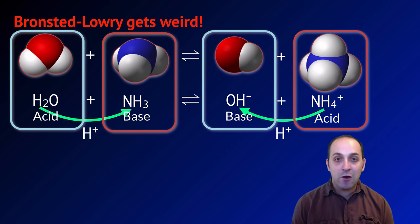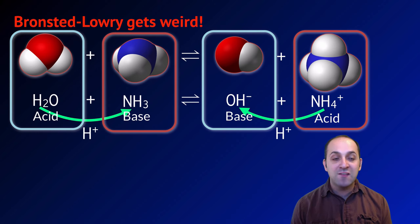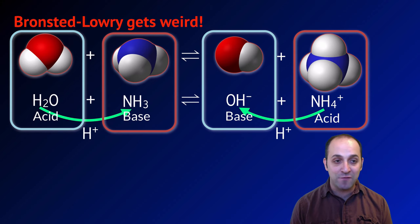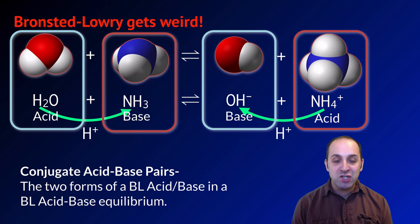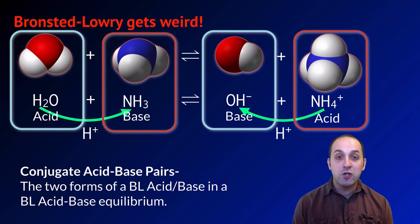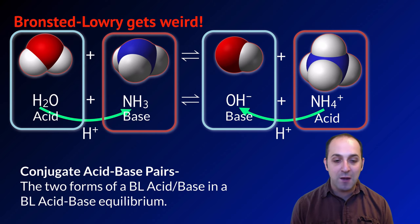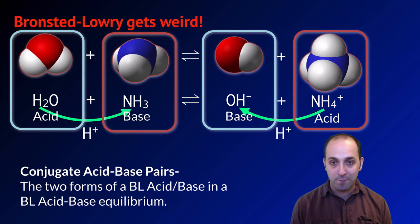This is characteristic of Bronsted-Lowry acids and bases. Each substance that acts as an acid in the forward reaction would act as a base in the reverse reaction, and vice versa. The term for this is conjugate acid-base pairs — the two forms of a particular substance acting as a Bronsted-Lowry acid and then a base in a Bronsted-Lowry acid-base equilibrium.